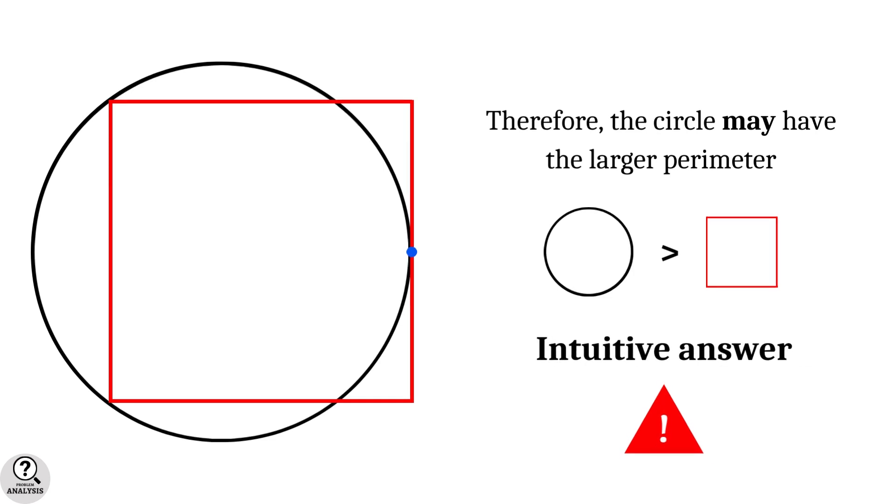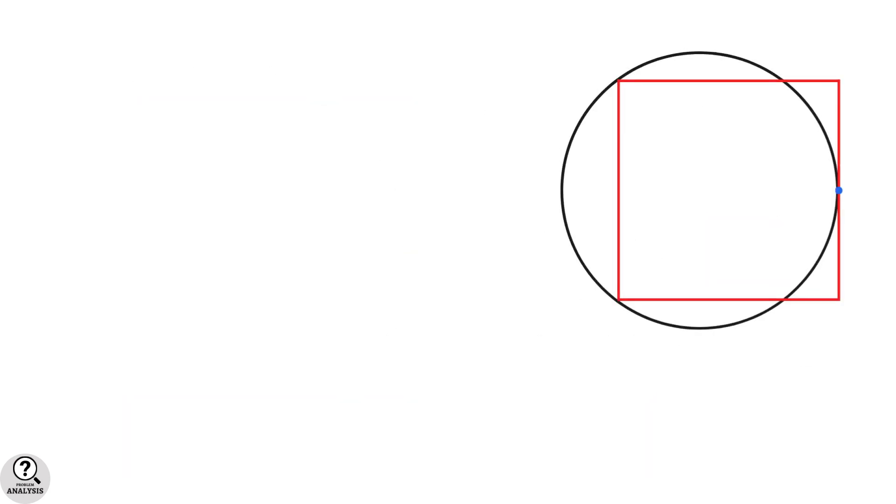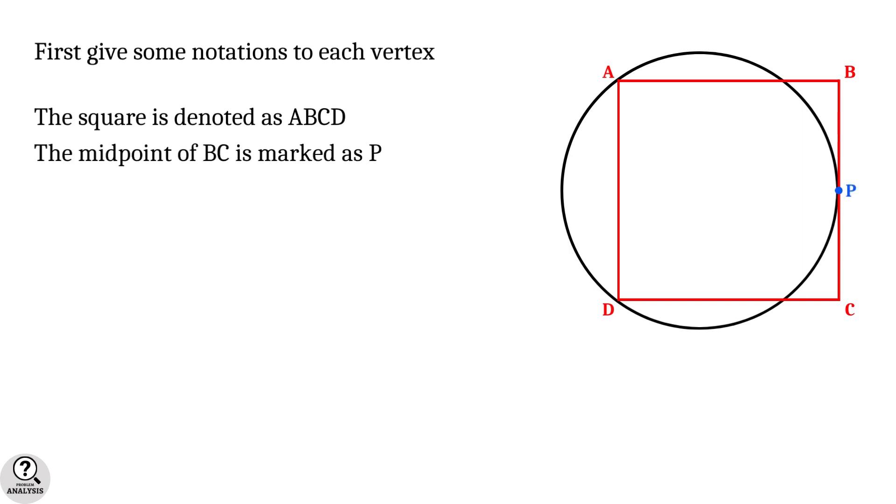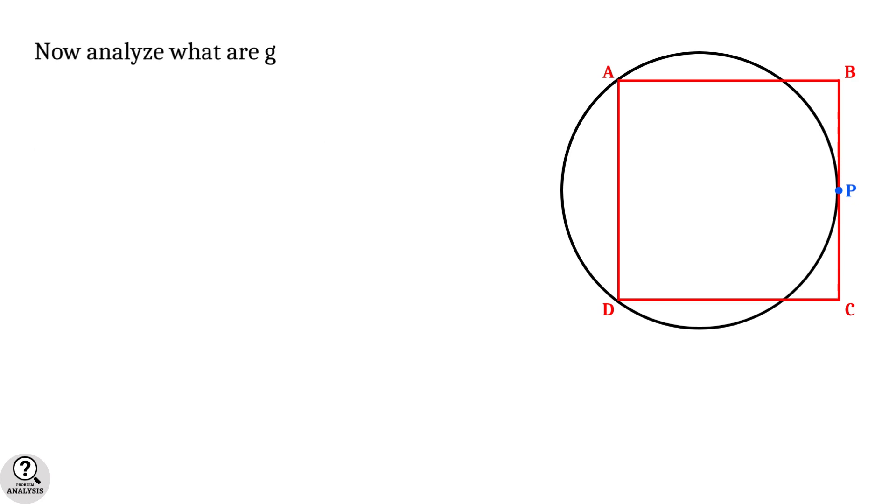Now let's approach the problem mathematically. So first, let's give some notations to each vertex. The square is denoted as ABCD, and the midpoint of BC is marked as P.